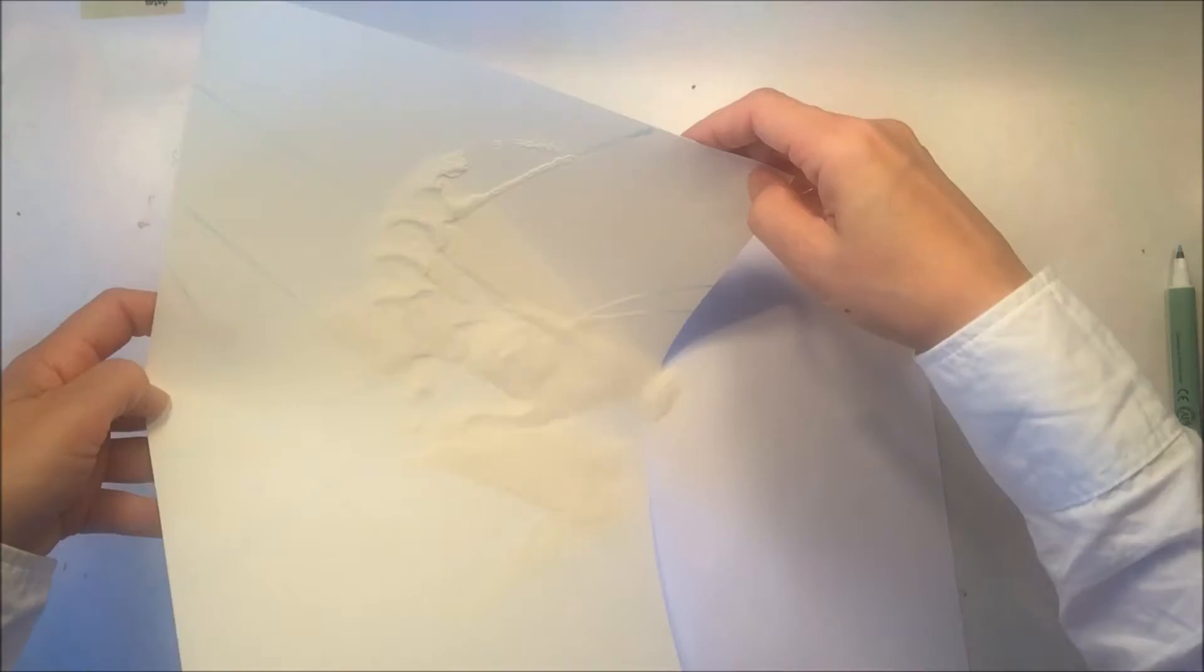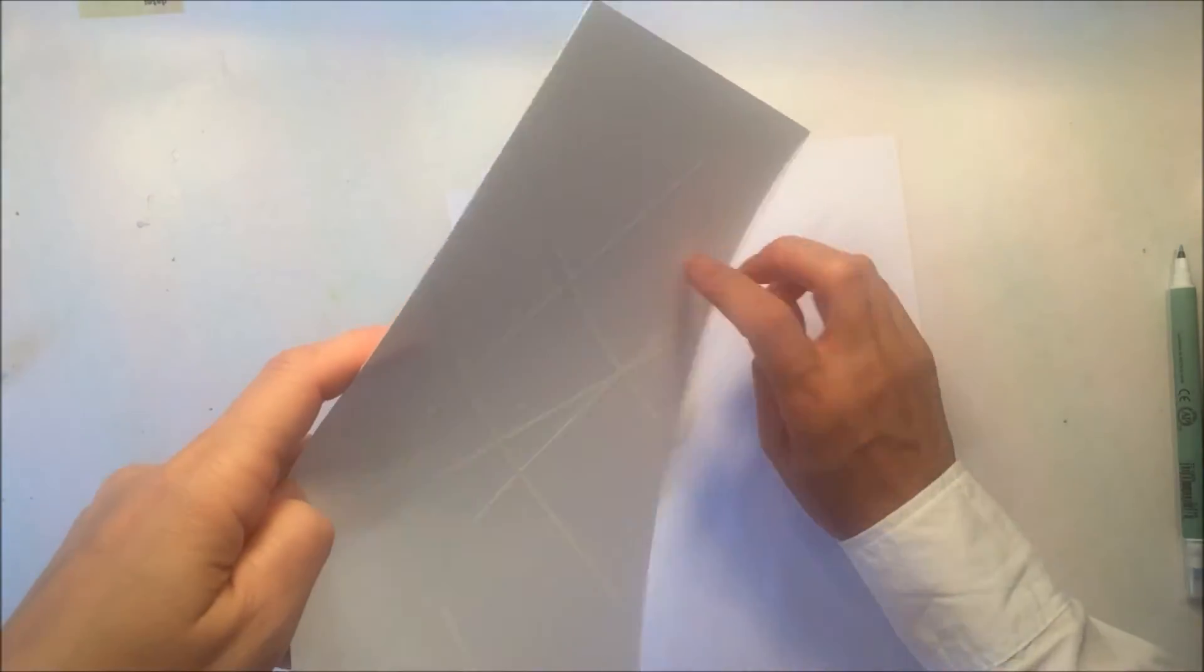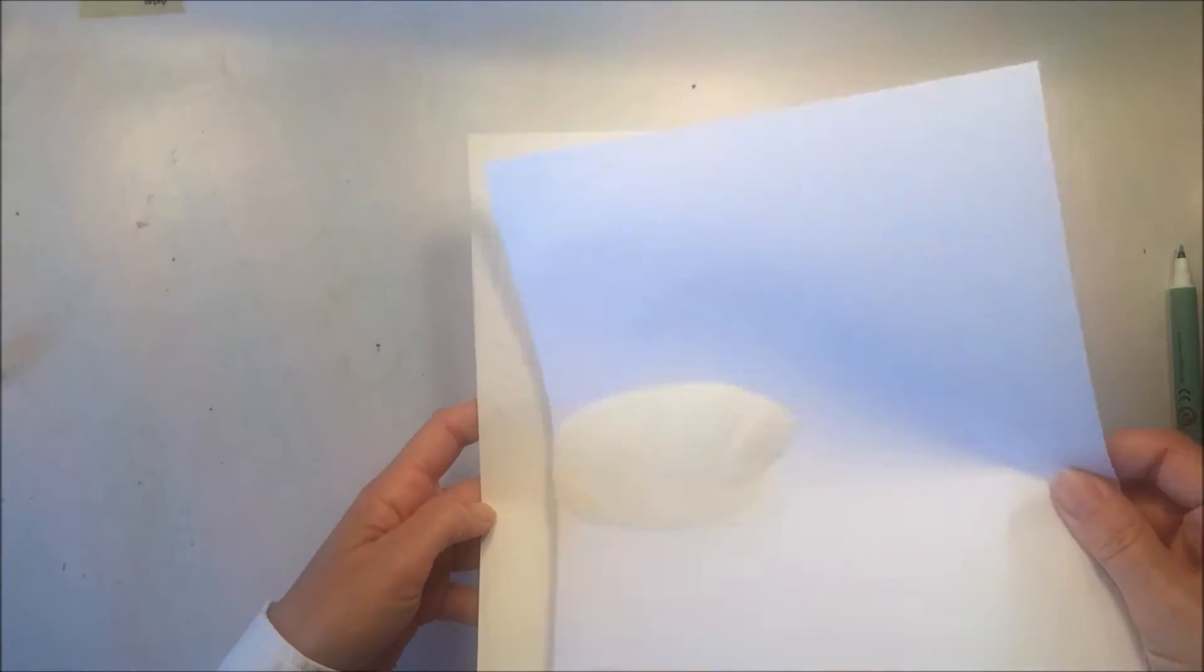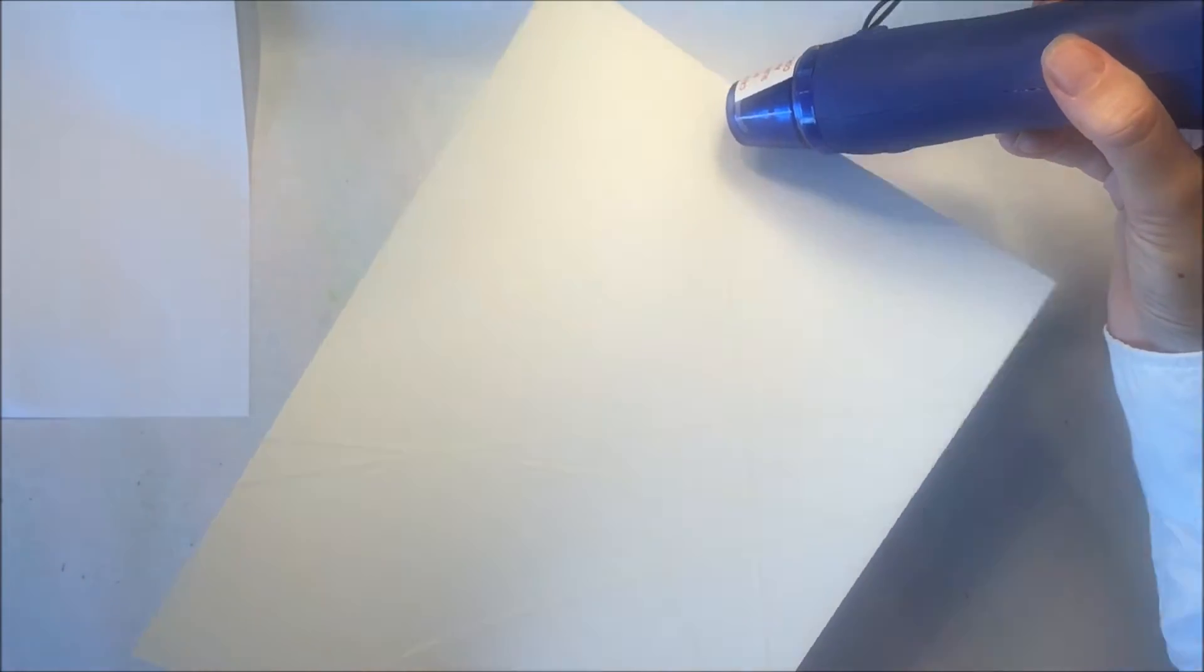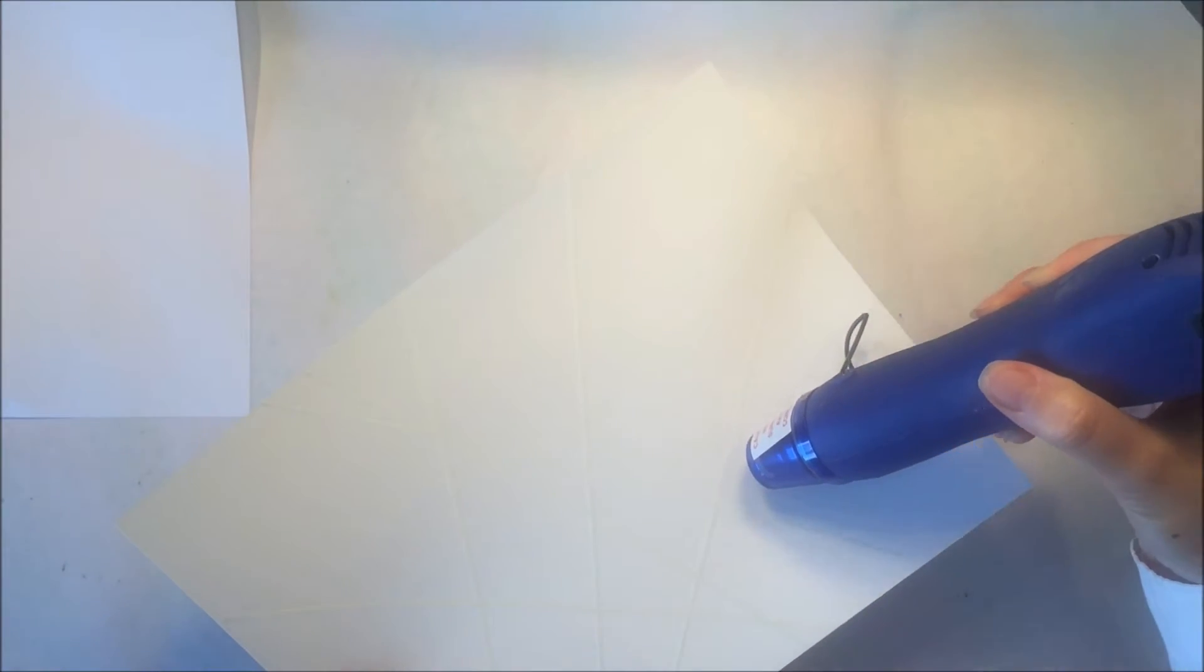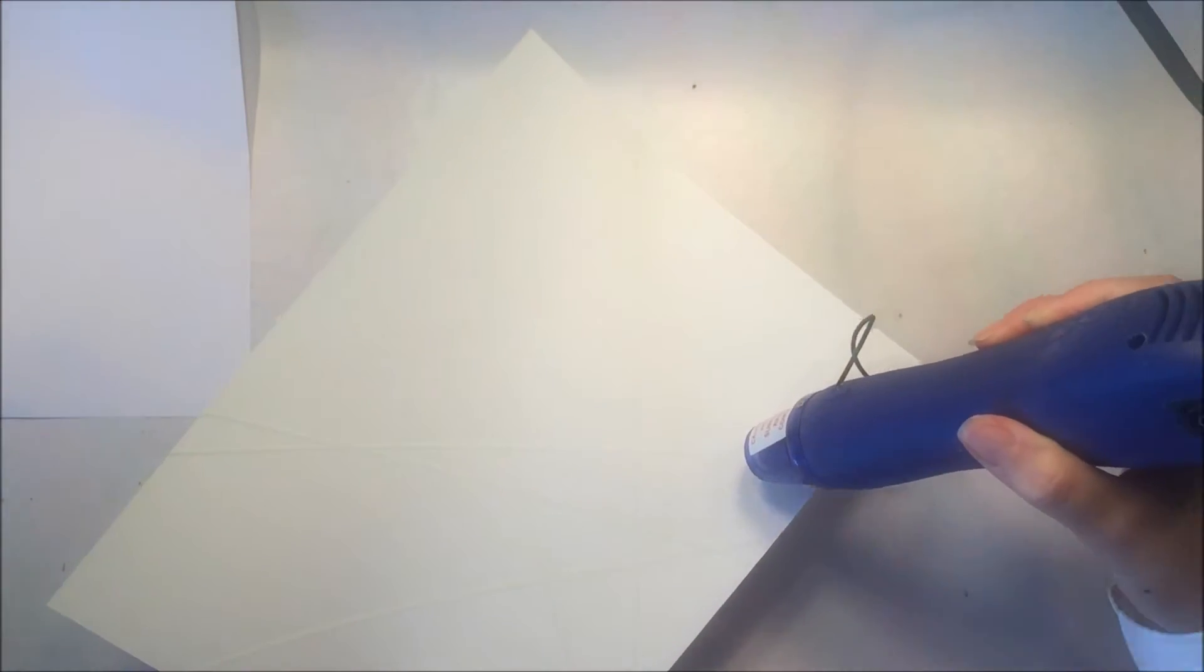I'm just going to pour the embossing powder onto the lines that I've made. You do need to use an embossing pen to do this because it will stay wet and slightly tacky, and that will allow this embossing powder to stick to it. If you use a normal pen, it dries and absorbs too quickly for the embossing powder to stick to it. You also want to use a heat tool in order to set the embossing powder.